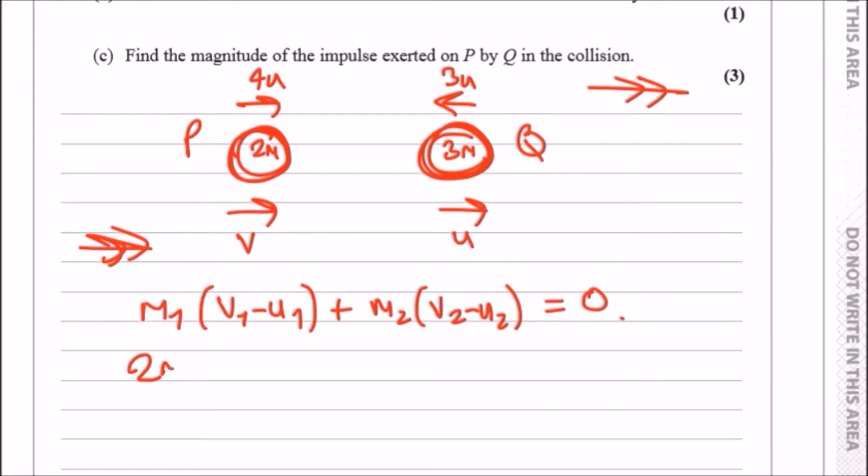Because we're working in this direction, the first mass would be 2m. The final speed is v minus the initial speed of 4u. That's all for P. As for Q, we have a mass of 3m.